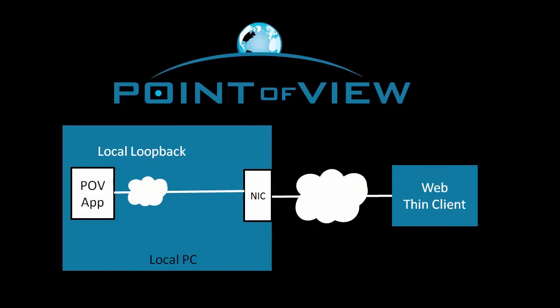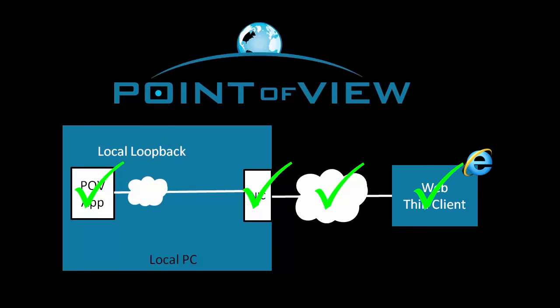Finally, we'll access the runtime application from a remote PC over the full network. Since we know the Point of View app and its IP addressing are working, if things don't work at this stage then we know it's a network issue and can focus our debugging energy on just that.